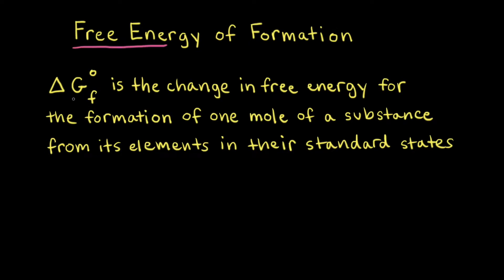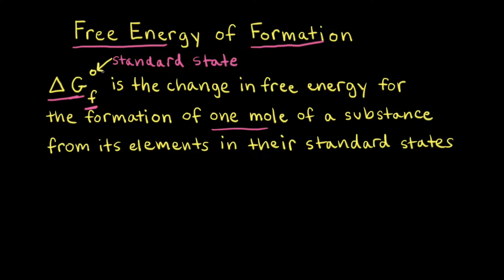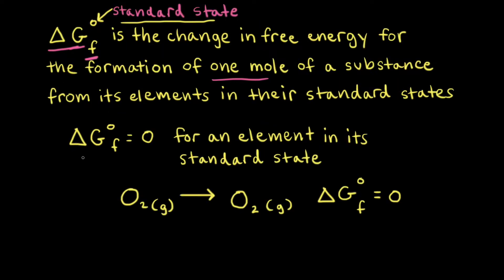Free energy is symbolized by G, and the change in free energy is delta G. When there's a subscript of F, this is talking about the change in the free energy of formation, which refers to the change in free energy for the formation of one mole of a substance from its elements in their standard states. The superscript naught refers to the fact that the substances are in their standard states. By convention, the standard change in free energy of formation for an element in its standard state is equal to zero.